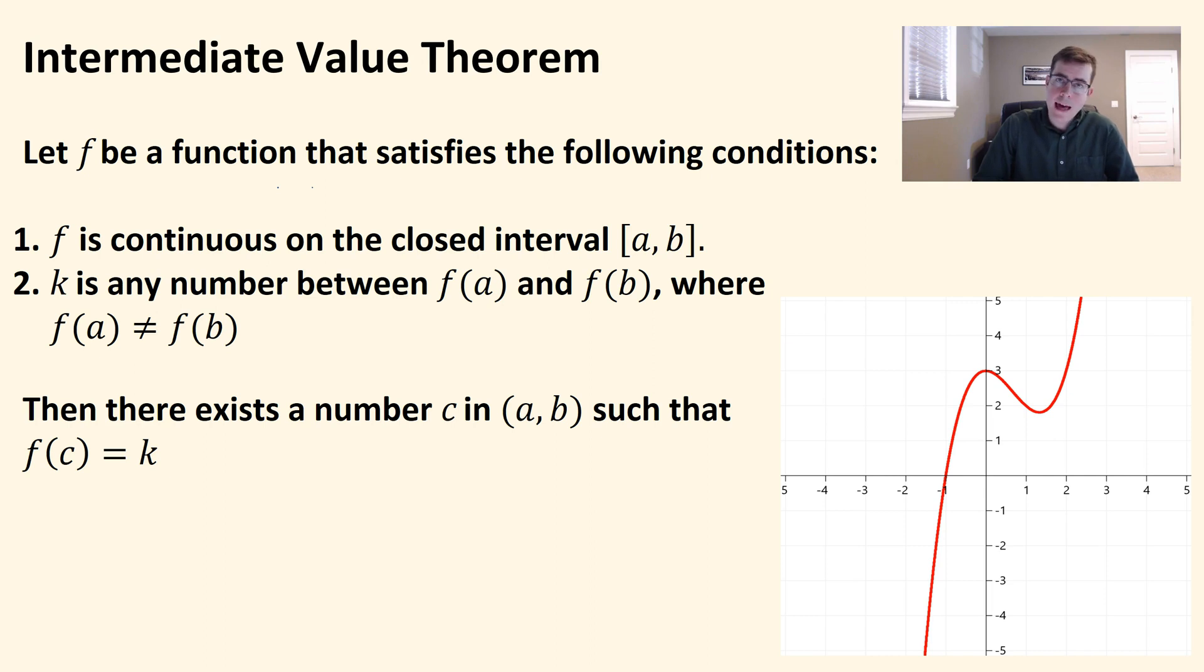And two, k is any number between f of a and f of b, where f of a does not equal f of b. Then there exists a number c in that open interval such that f of c is equal to k.